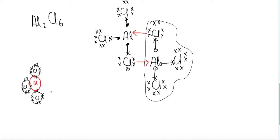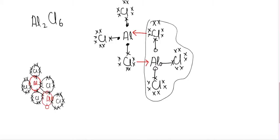The bridging chlorines each donate their lone pair to the adjacent aluminum via a coordinate covalent bond. Each atom ends up with eight electrons in its outermost shell. In Al2Cl6, two bonds are coordinate covalent bonds and the remaining bonds are covalent bonds.